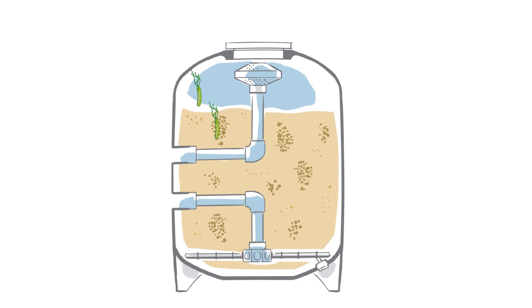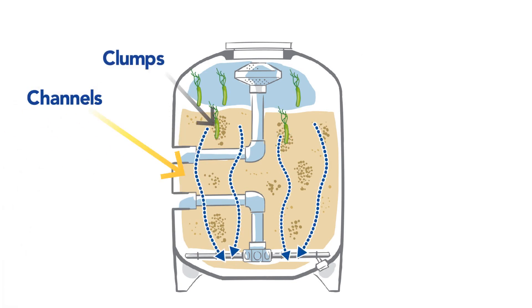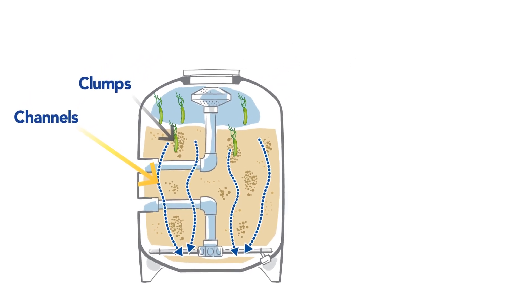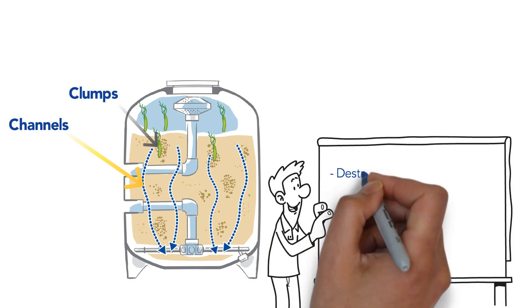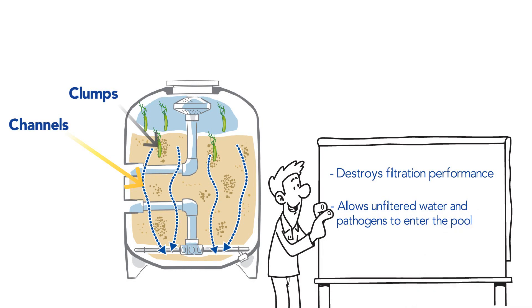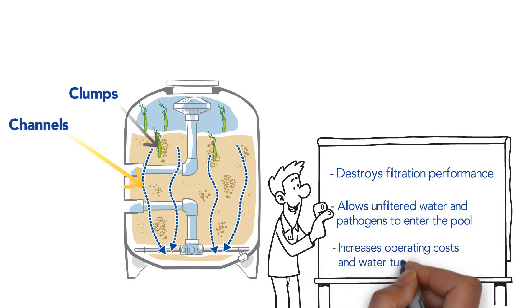After only six to twelve months, biofilm starts forming clumps, leading to the formation of channels in the filter bed. With time, filtration performance becomes inconsistent and unreliable, by allowing unfiltered water and bacteria to enter the pool, while increasing operating costs and water turbidity.